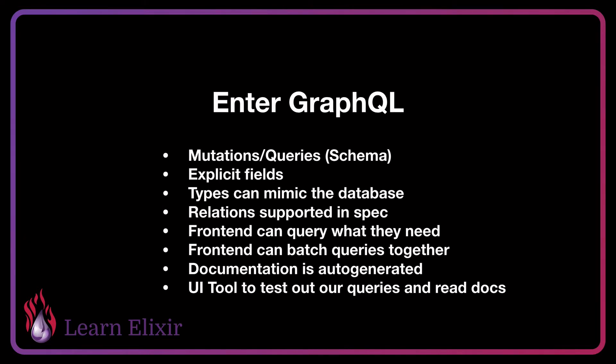In GraphQL, we have something known as a schema. Our schema is essentially the contract between the frontend and backend on what the specification looks like. Inside of our schema, we have our mutations, which are used to modify the server's data, and our queries, which are used to fetch the server's data. Both of these are sent over POST.